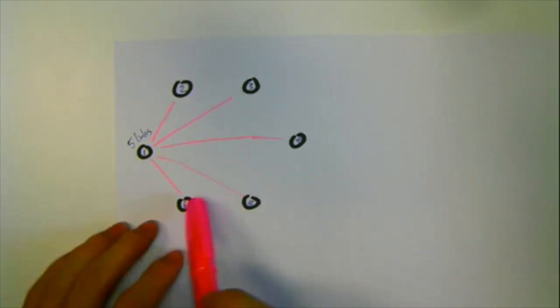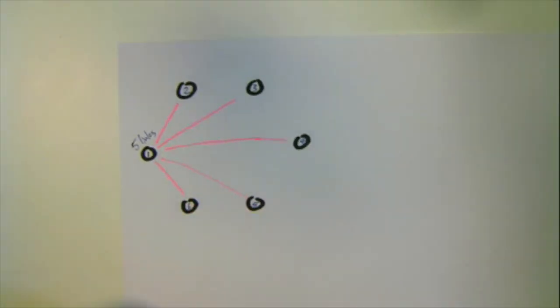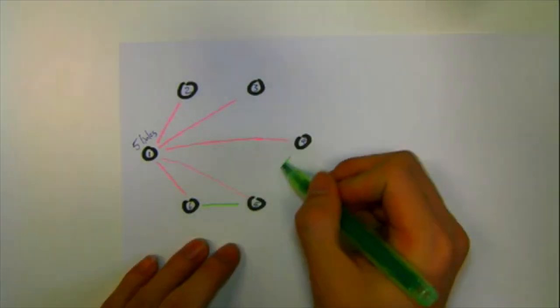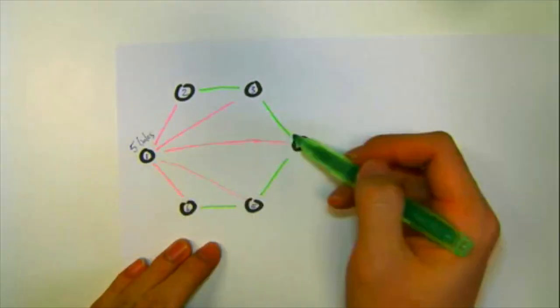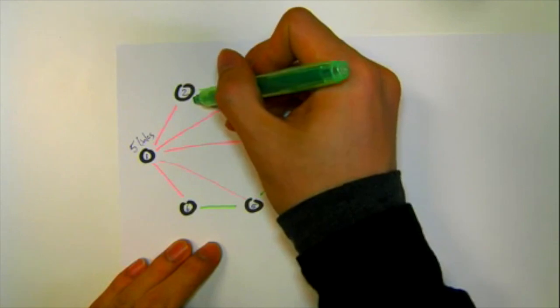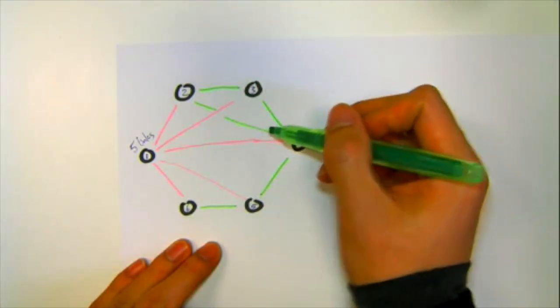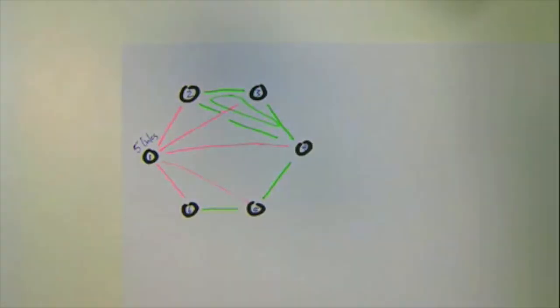Stare at it for a bit. Wait, the link between 2 and 3 can't be pink, or we'll have a pink triangle, so it must be green. And then the same for 3 and 4, 4 and 5, 5 and 6, and even 2 and 4. Aha, we have already forced a green triangle. Very, very interesting.